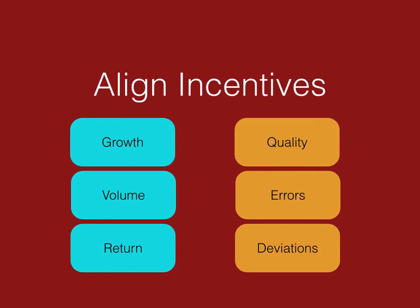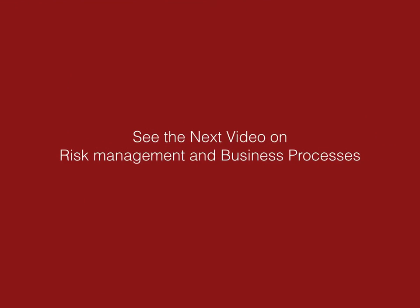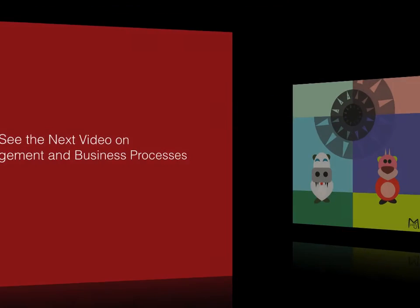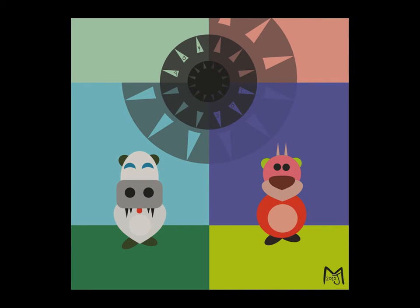In the next video we're going to look at how risk management and business processes can work together — something the chief risk officer would oversee and push the CEO to implement. I've already made that video and will be uploading both at the same time. Also, I'm thinking of pursuing abstract art with shapes, vectors, and illustrations, so please let me know in the comments what you think of my art!